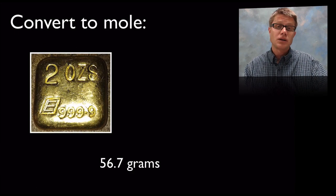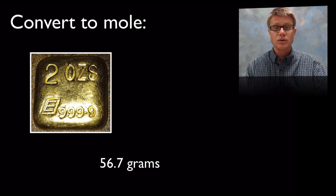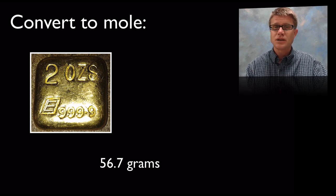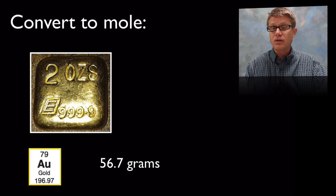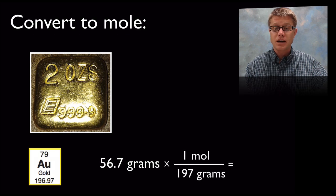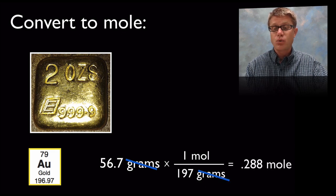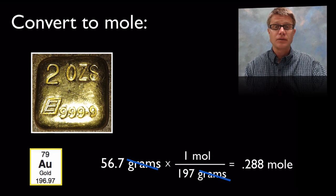And so what we can do is we can convert to moles. Just like we converted to bricks we could convert to moles. And let's say I have a 2 ounce chunk of gold which is around 56.7 grams. And so what I could do is since I know that 1 mole is going to be 197 grams I could cancel off those grams again. And what I could come up with is about 0.288 mole. And so a mole is going to tell us how much of that element is going to be found.